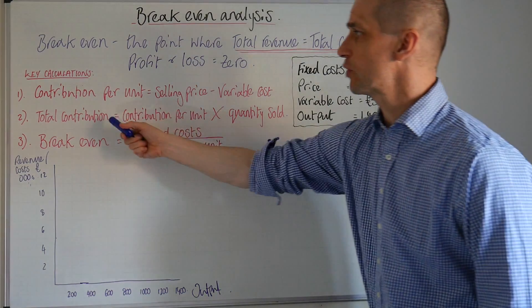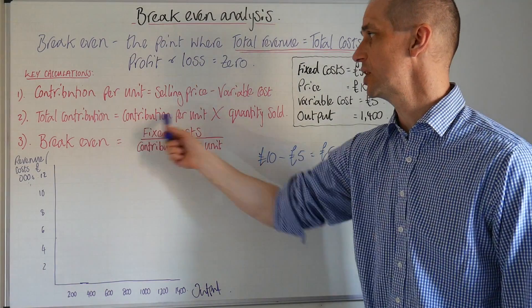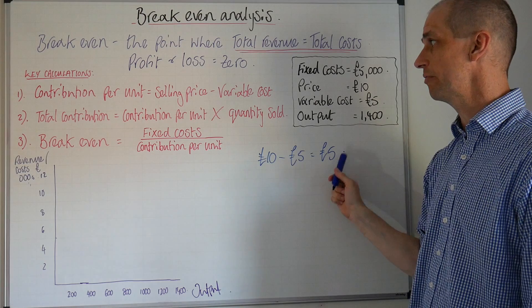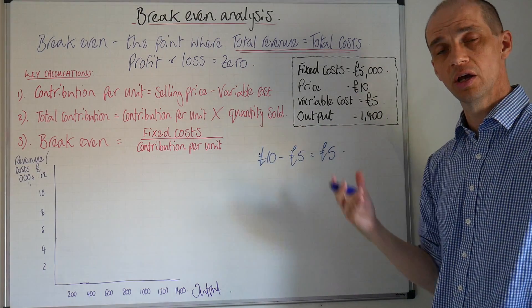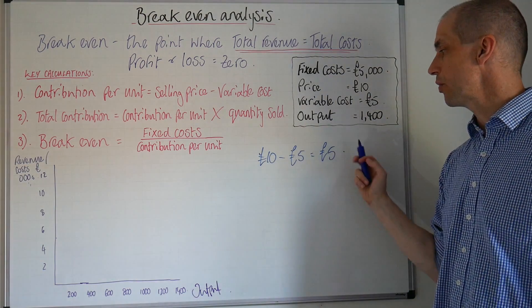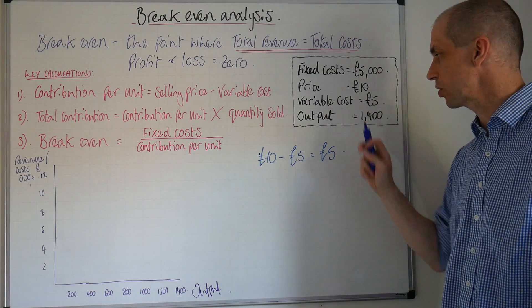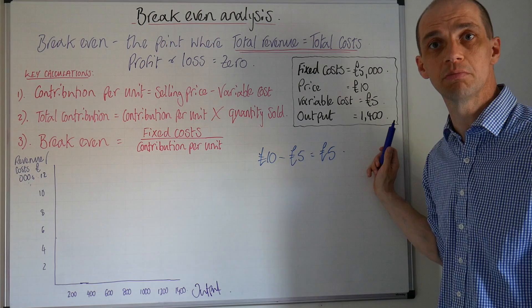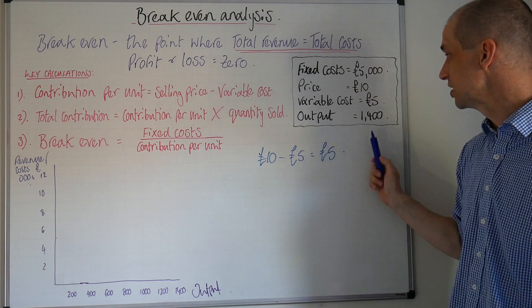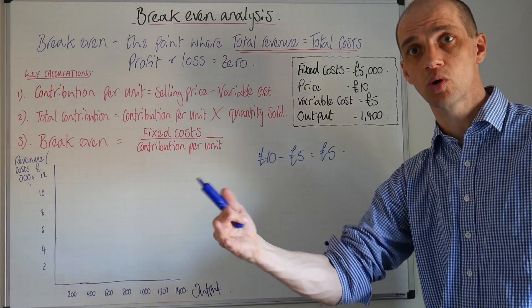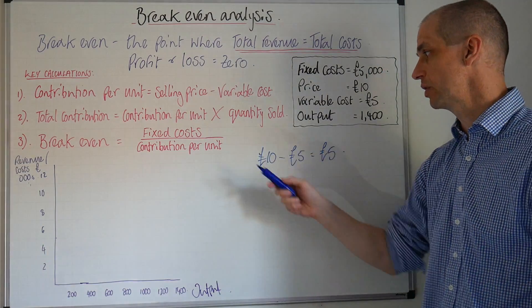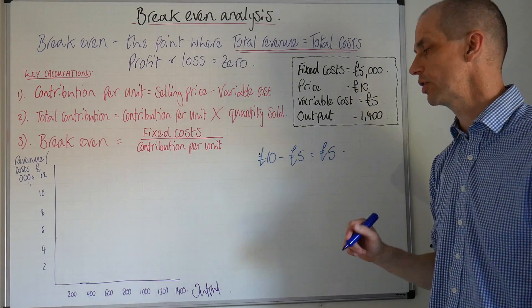Now we've got total contribution. So this is contribution per unit, £5, times the quantity sold. Well we don't necessarily know how many have been sold yet, but we could if we wanted multiply that by 1,400 to tell us what the total contribution would be if all units were actually sold given the period that we're working to.